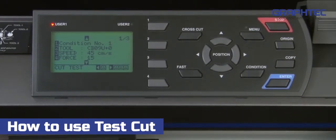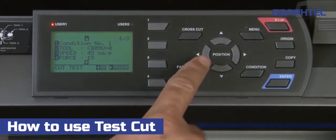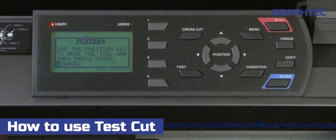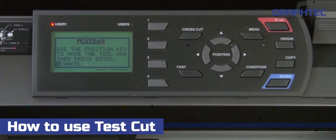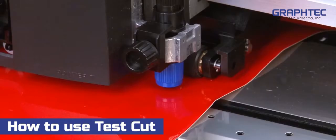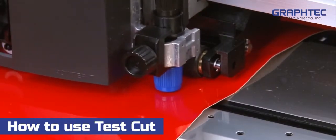Let's start by cutting a single square and triangle pattern by pressing the left arrow key. It will show this message, which allows us to use the arrow keys to move the tool head to the location where we want the test cut to be. In this case, we can just press enter, and the cutter will cut the test pattern in its current location.